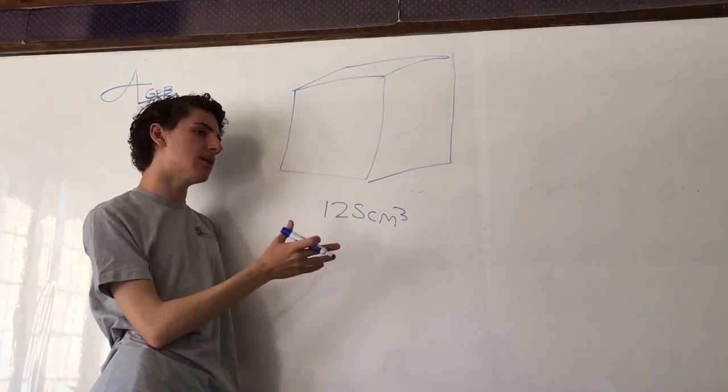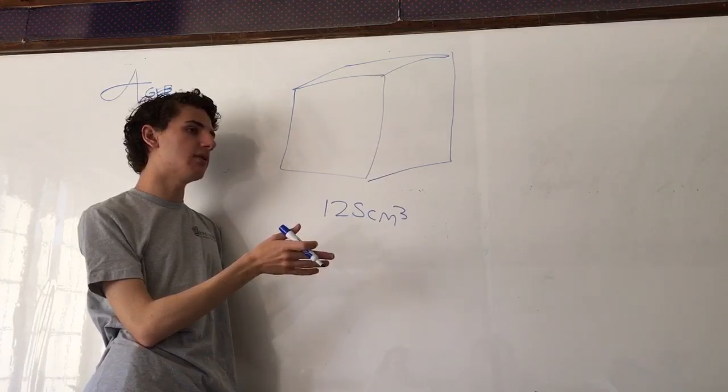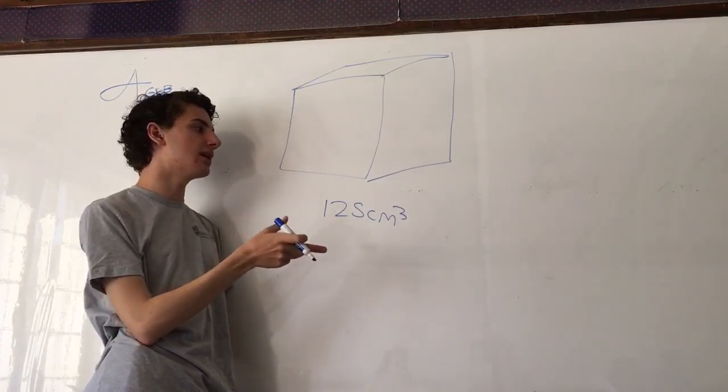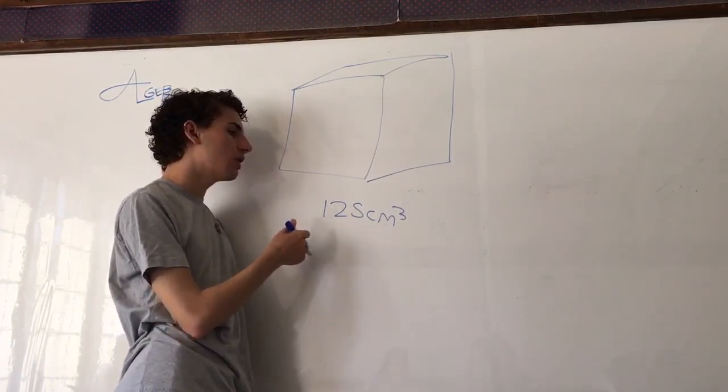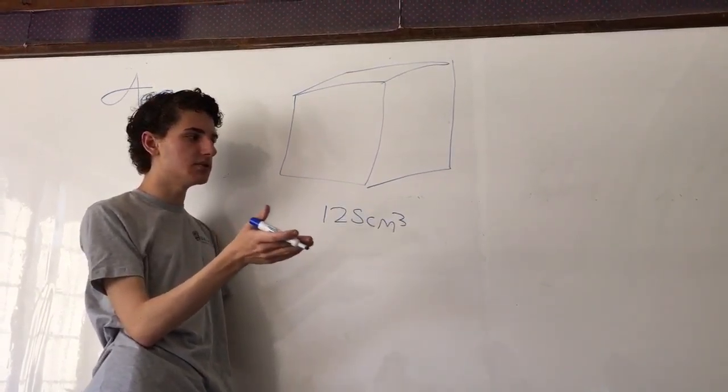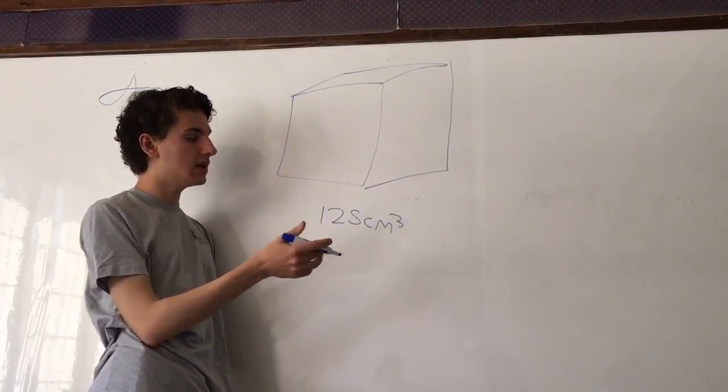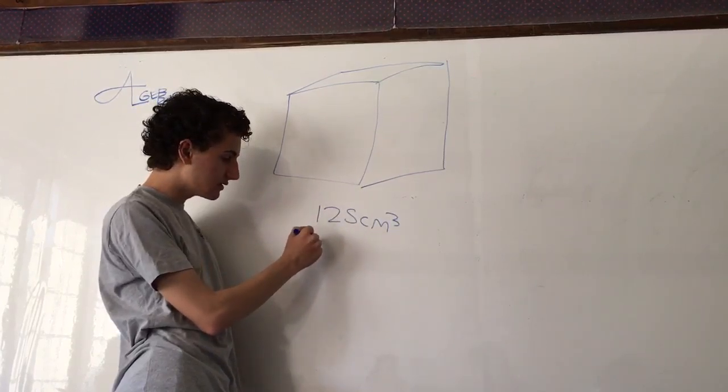We know that volumes of cubes are derived from the cube of their individual side lengths. So if you're familiar with cubes of numbers, you know that 125 is just 5 cubed.